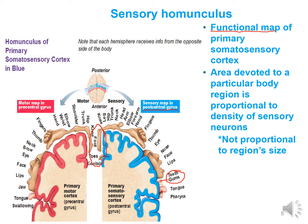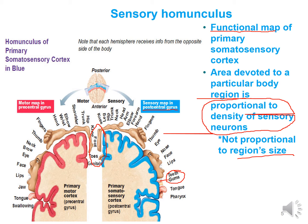All of these structures have different sizes because the area devoted to a particular body region is proportional to the density of sensory neurons for that region, not to the size of the region itself. Although the back may be very large, there is not a large portion of the somatosensory cortex devoted to it because it's about the density of sensory neurons, not the body part's physical size.